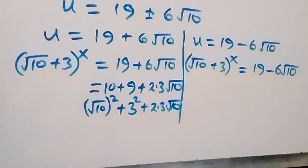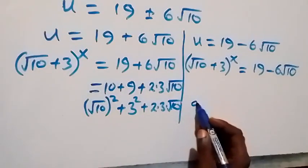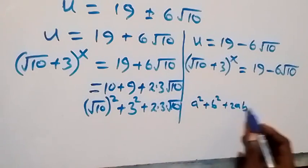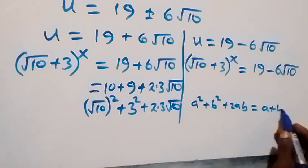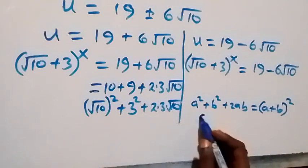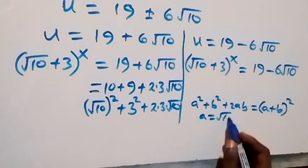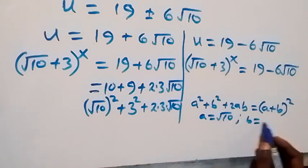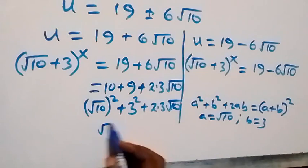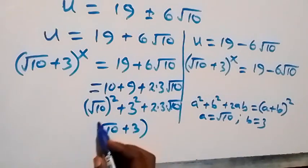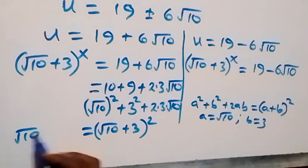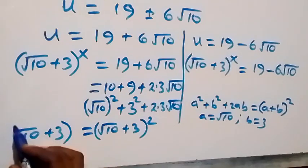From here, when we compare this with a squared plus b squared plus 2ab, which can be written as (a plus b) all squared — what we have here implies that root 10 is serving as a and 3 is serving as b. This means this can be written as (root 10 plus 3) squared, and what we have here is now equal to (root 10 plus 3) raised to power x.